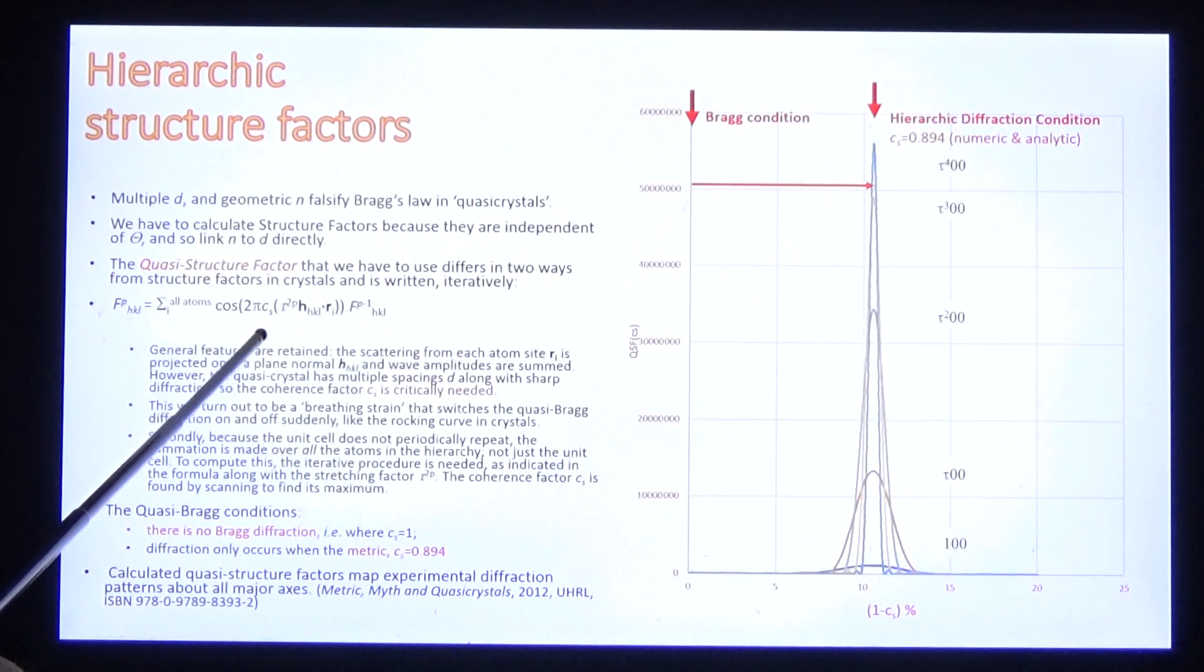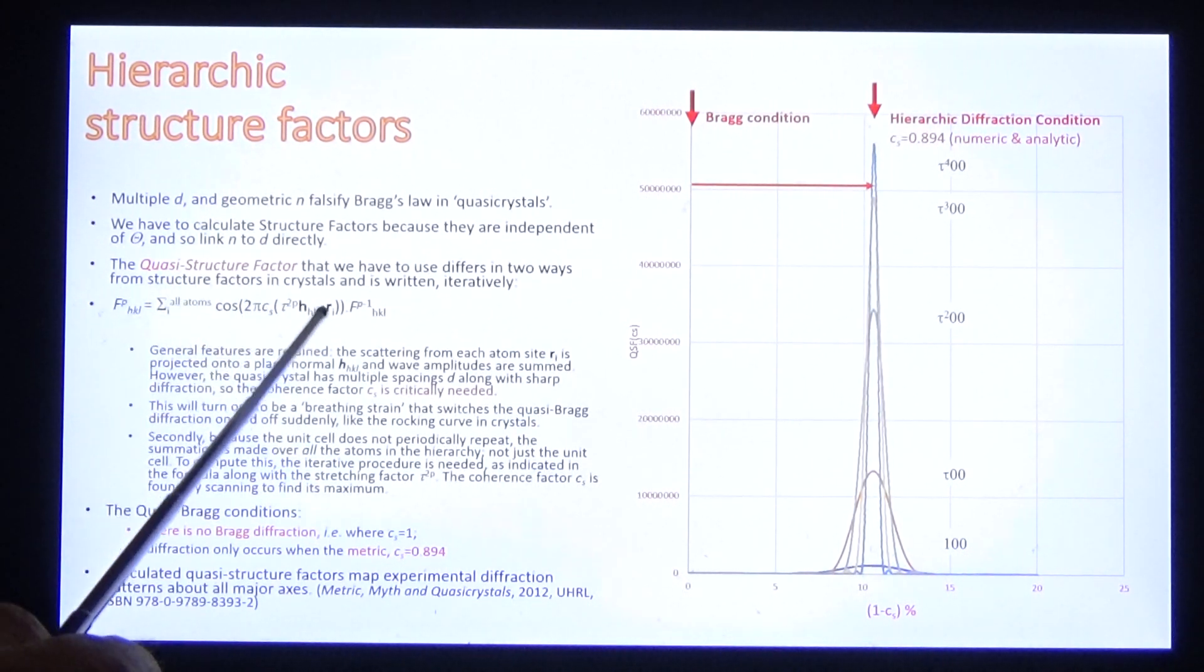And it will show us why diffraction is necessary. Secondly, because our unit cells are not periodically repeating, our amplitude has to be calculated iteratively. Amplitude order p is equal to amplitude order p-1 times this function of the stretching factor phase.